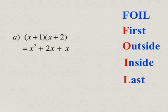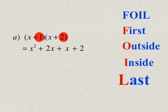And next, we're going to multiply our last terms. So that's going to be positive 1 times positive 2, and that's going to be plus 2.